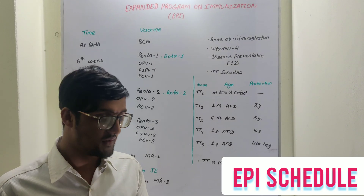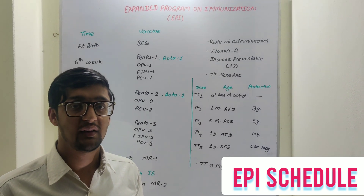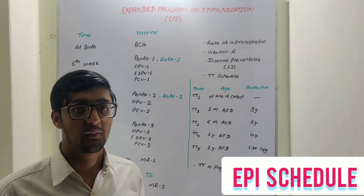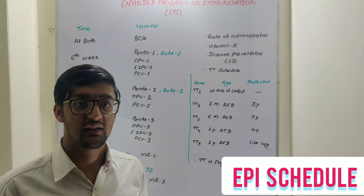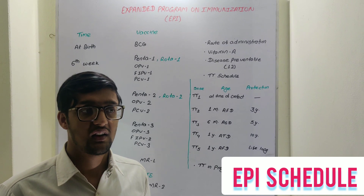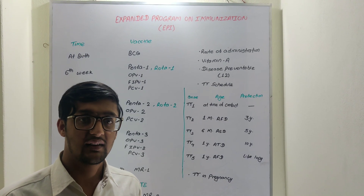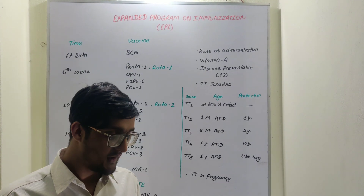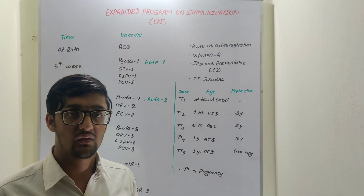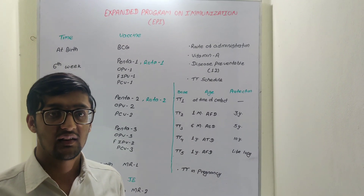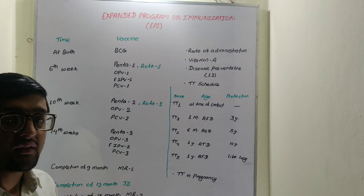Hello, welcome to our video. Today I am going to discuss the EPI schedule — that is, Expanded Program on Immunization — or as it is known in different countries, the National Immunization Schedule. We are mainly going to discuss the EPI schedules of Nepal, India, Bangladesh, and Pakistan. Before starting country-wise, let's discuss one universal EPI schedule and then divide it according to country.